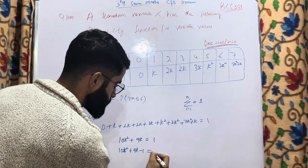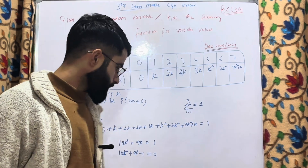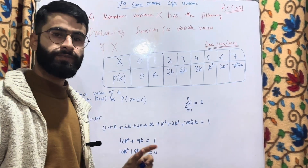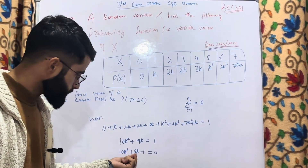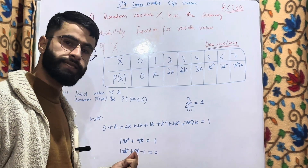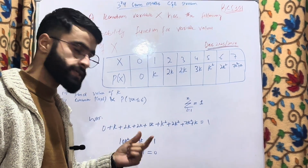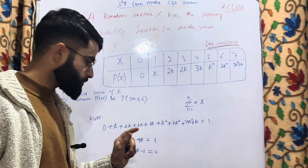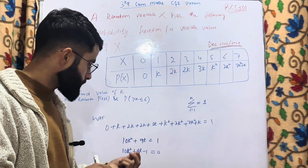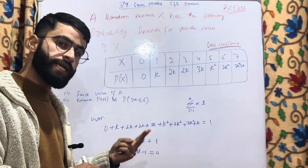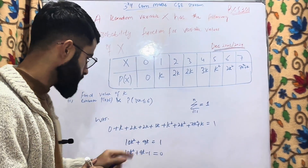Shifting 1 to the left-hand side gives: 10k² + 9k − 1 = 0. Now we need to use splitting of the middle term. To split 9k, we need two terms whose sum is 9k and whose product equals 10k² × 1 = 10k². So we split 9k into two terms that satisfy both the sum and product conditions.